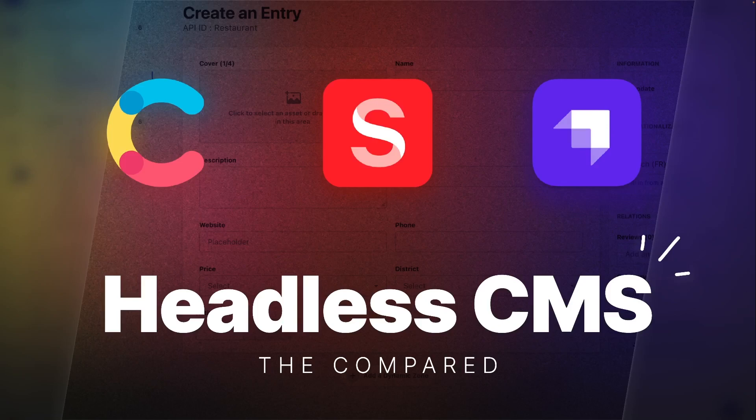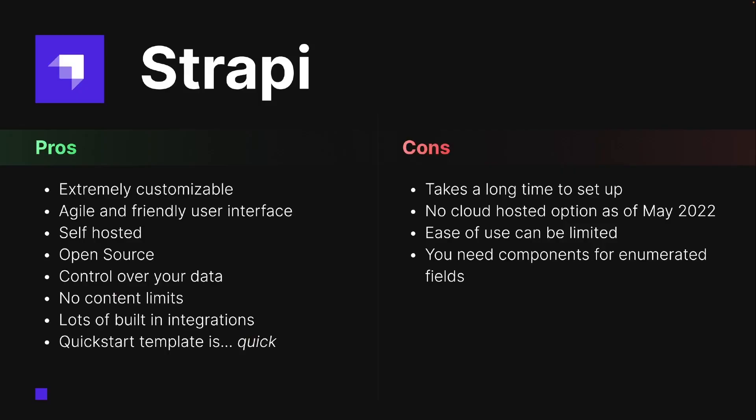Without further ado, let's get into the pros and cons of Strapi. The idea with Strapi is it's a headless CMS that's completely open source and you have full control over whatever you'd like to do with it — wherever you'd like to host it or whatever database you'd like to use with it. Because of that, a lot of people prefer Strapi for custom integrations they might have with different software, and it also has lots of built-in integrations of its own using its vast plugin marketplace.